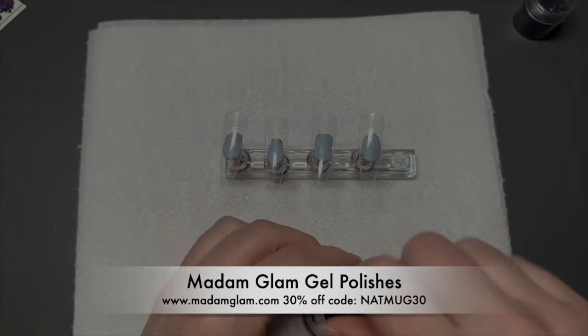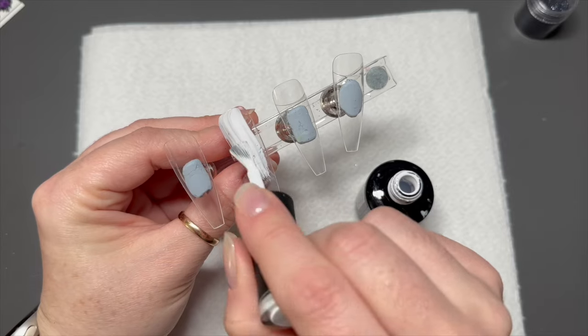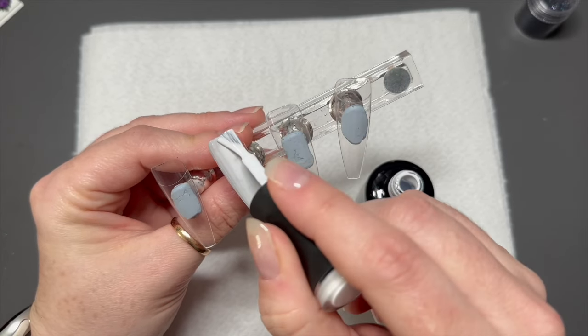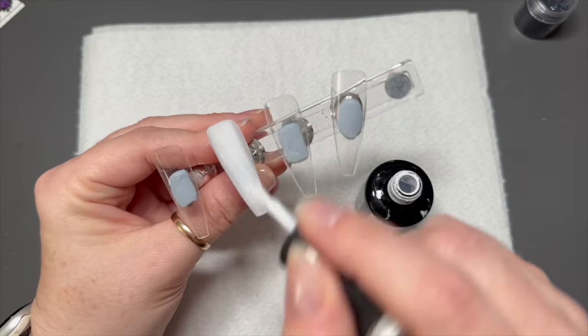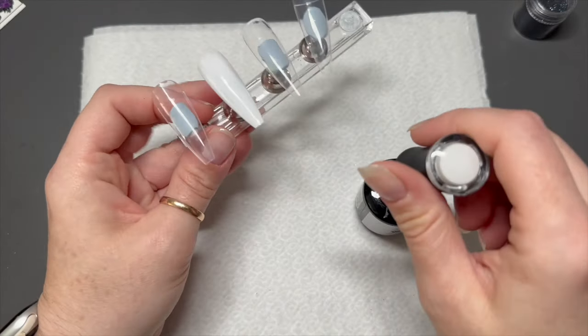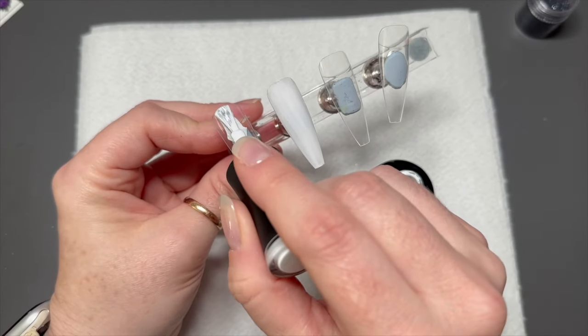I'm going to start by applying two coats of white to two nails. You actually need to apply two coats of white to all four of the nails that I'm doing today.